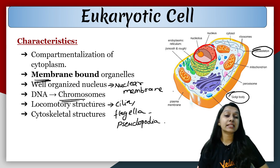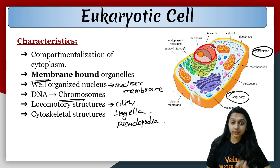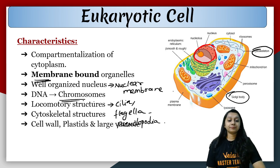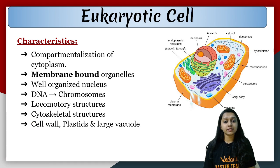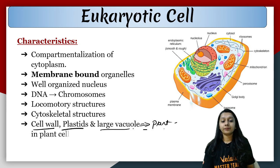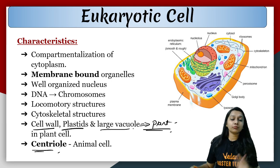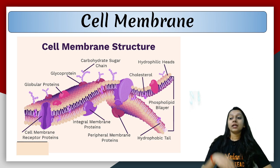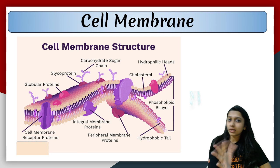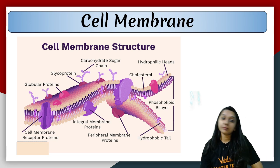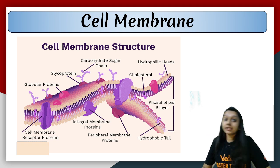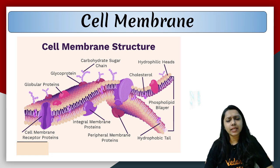In our body, bones are the skeleton which give us a particular shape. In the same way, the cytoskeleton gives the cell a particular shape and structure. What is present in plant cells? Cell wall, plastids, and large vacuoles. And if centriole is present, that is the case of animal cells. Now, cell wall will not be in every cell — that is not compulsory. But every cell has a cell membrane. Cell membrane is compulsory and is the same in both prokaryotes and eukaryotes — there is no difference.